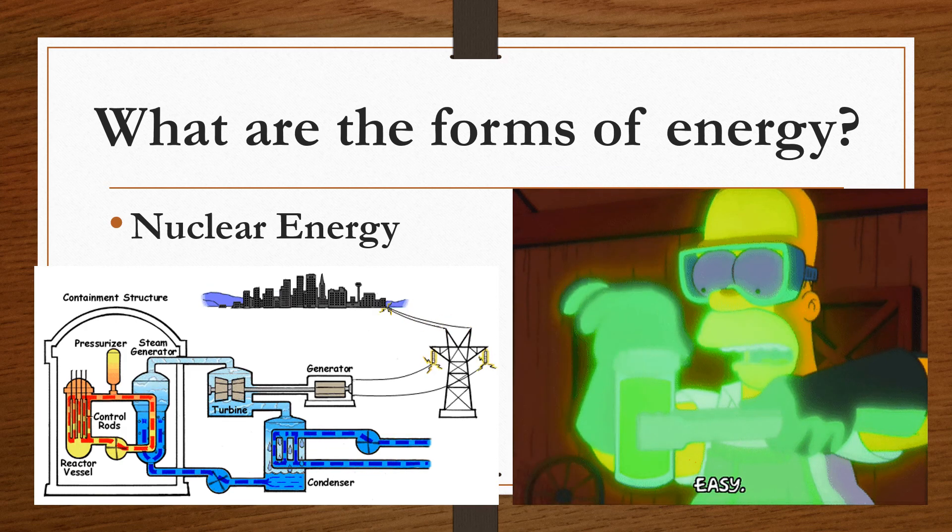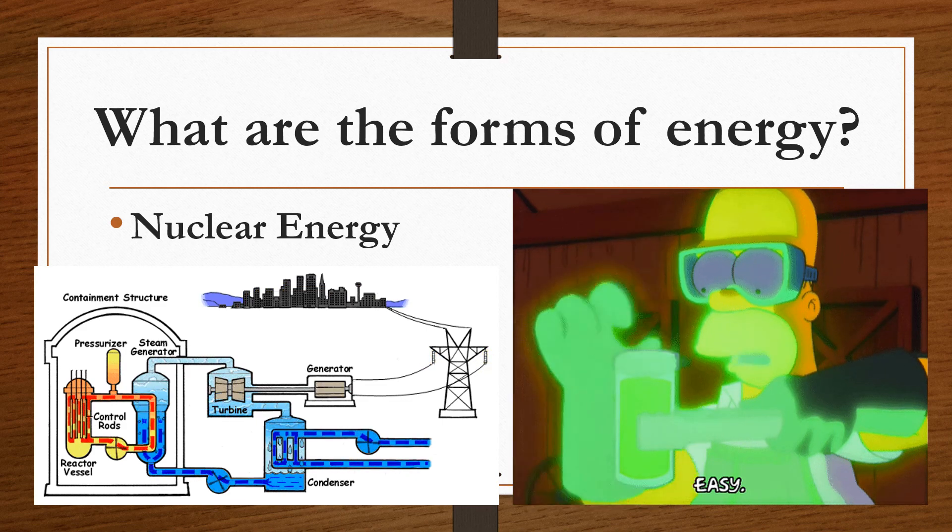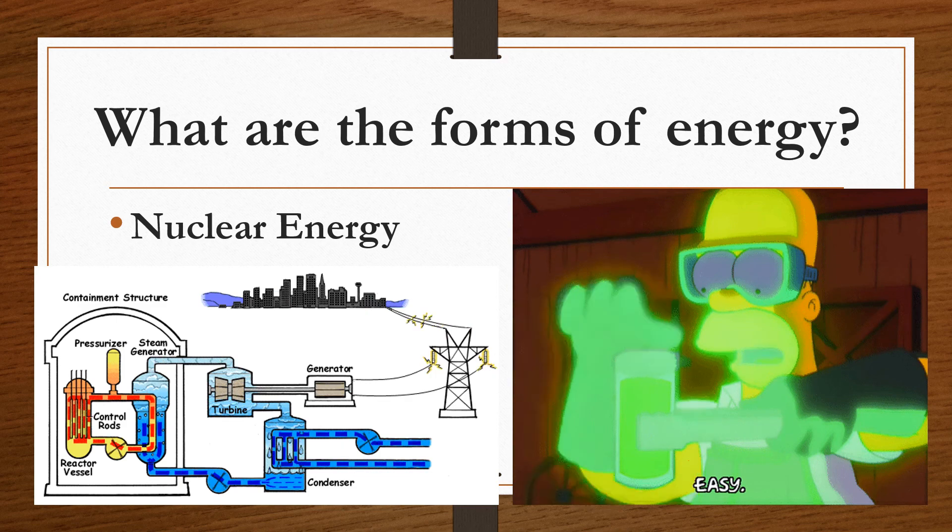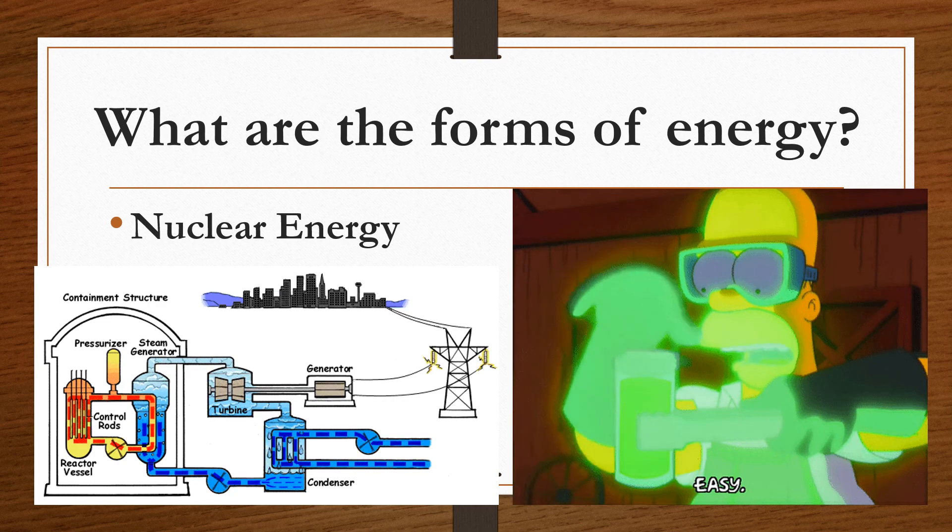The difference between nuclear energy and chemical energy comes from the type of reaction that occurs. Nuclear energy is, as what I've said, the splitting or combination of nucleus to form new elements.